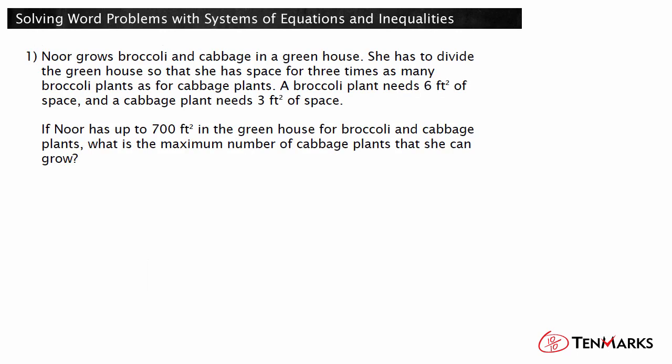Noor grows broccoli and cabbage in a greenhouse. She has to divide the greenhouse so that she has space for three times as many broccoli plants as for cabbage plants. A broccoli plant needs six square feet of space and a cabbage plant needs three square feet of space. If Noor has up to 700 square feet in the greenhouse for broccoli and cabbage plants, what is the maximum number of cabbage plants that she can grow?